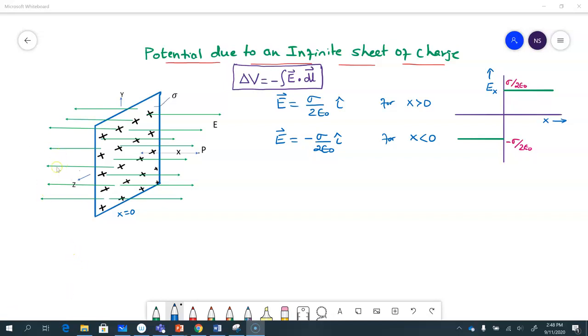So here we want to get an expression for the electric potential due to an infinite sheet of charge. This represents a sheet of charge—you can imagine it going in all directions. It's a very large sheet of charge placed in the yz plane, so here we are assuming z is coming out and x is to the right.